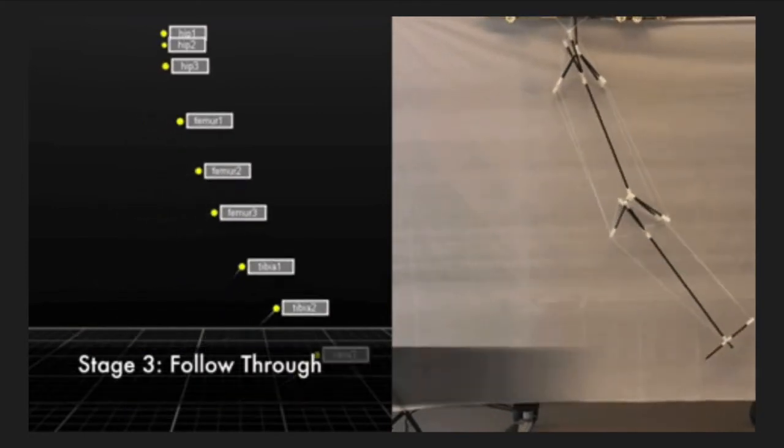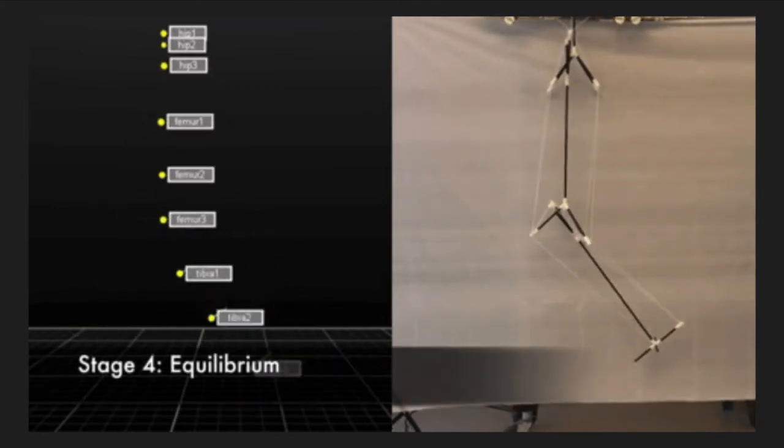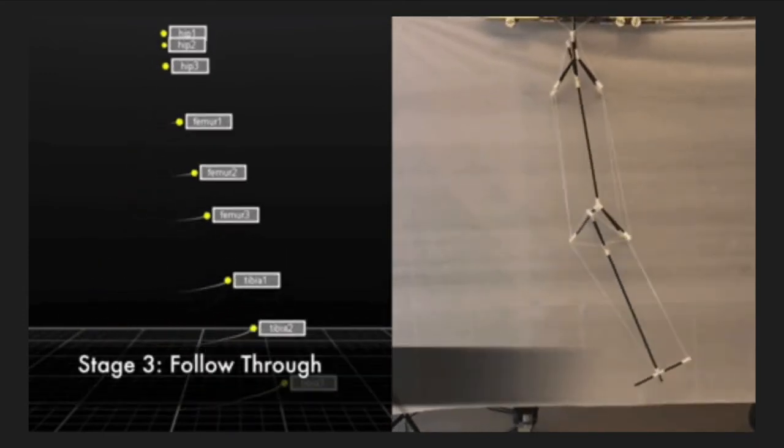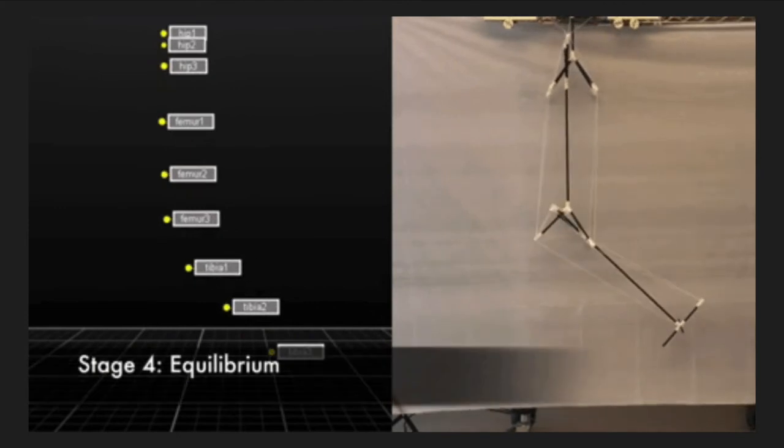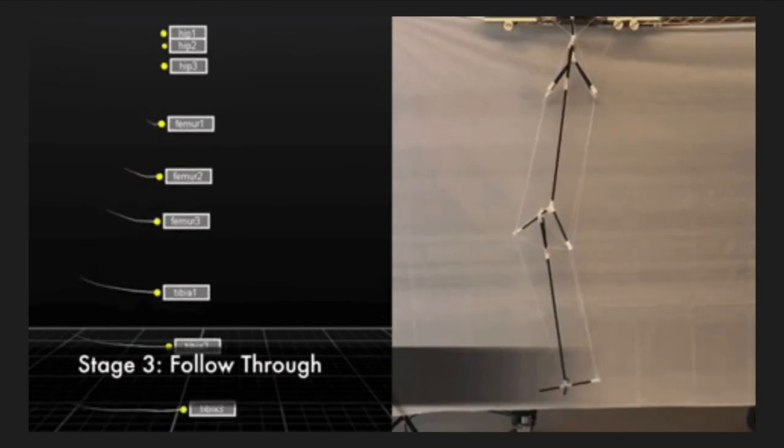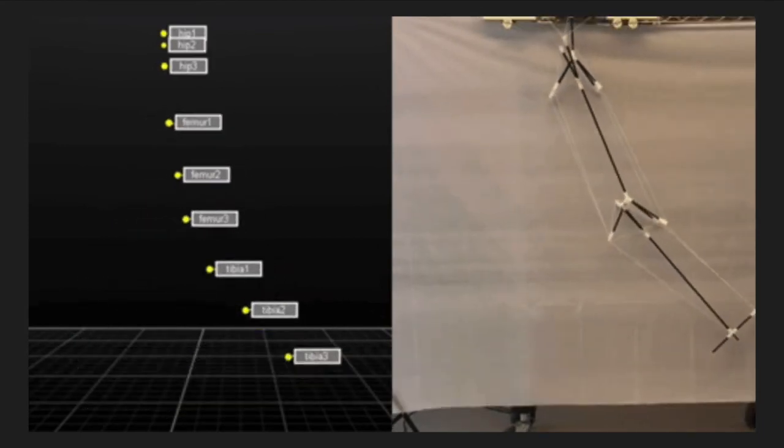The first stage contracts the hamstring muscle. The second slowly extends the gluteus maximus and the hamstring muscle while contracting the iliopsoas muscle. The third stage reverses the motion by releasing the iliopsoas and contracting the gluteus maximus. The fourth and final stage loosens all tension elements back to equilibrium or the starting position.